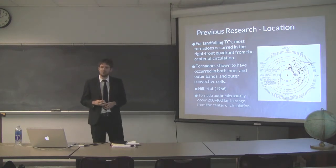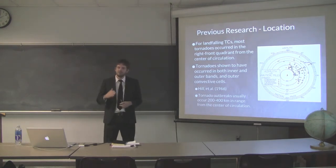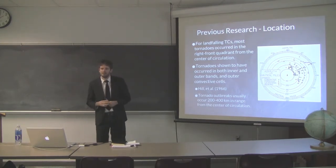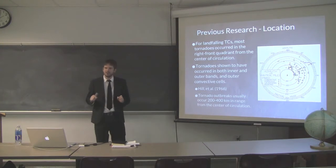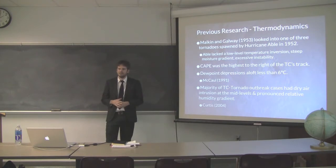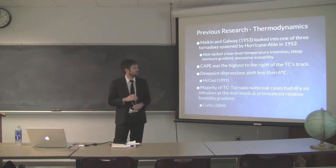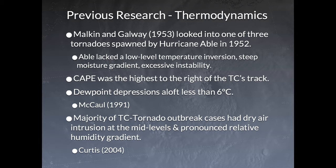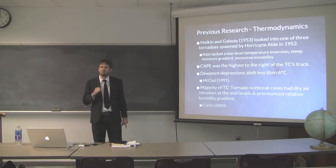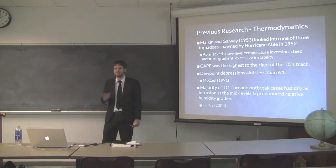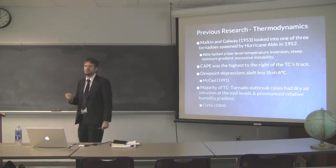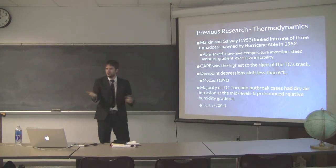We know that tropical cyclones can spawn extensive wind damage, coastal flooding, and inland flooding, but they also can produce tornadoes at, after, or even before landfall. A lot of TC tornadoes occur on the right quadrant of the center of circulation, forming in the inner and outer convective cells, usually about 200 to 400 kilometers from the center. One of the first papers on this was by Malcolm Galway in 1953, looking at Hurricane Able, which spawned three tornadoes in Virginia.